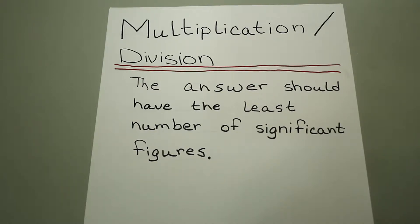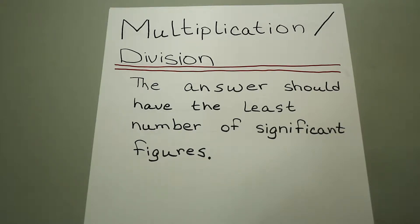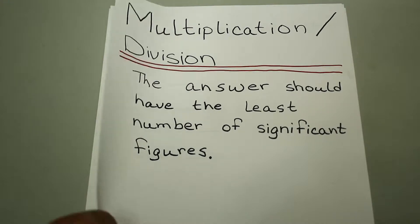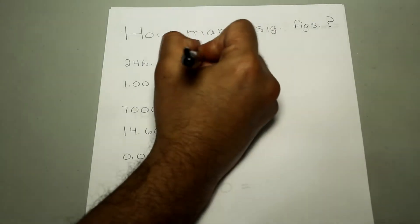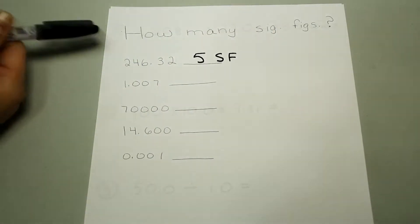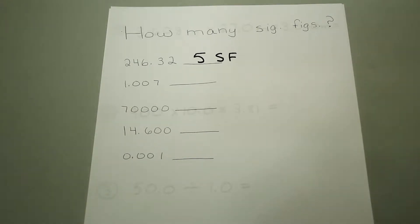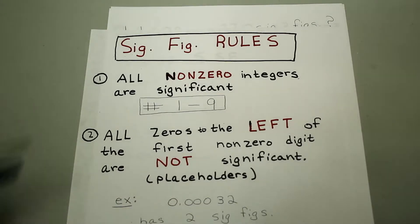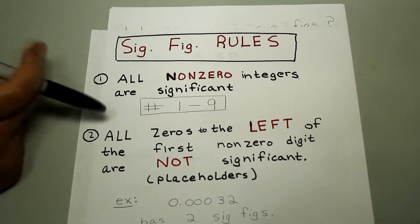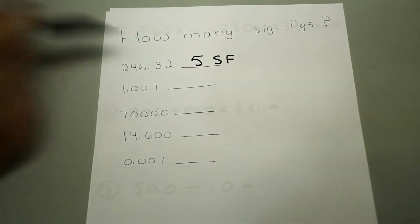When we multiply and divide with significant figures, the answer should have the least number of significant figures. First let's start by identifying how many significant figures a number has. So 246.32 has five significant figures, because it has five numbers and all of them are non-zero integers. We said in the previous video that all non-zero integers are significant, so it has five significant figures.